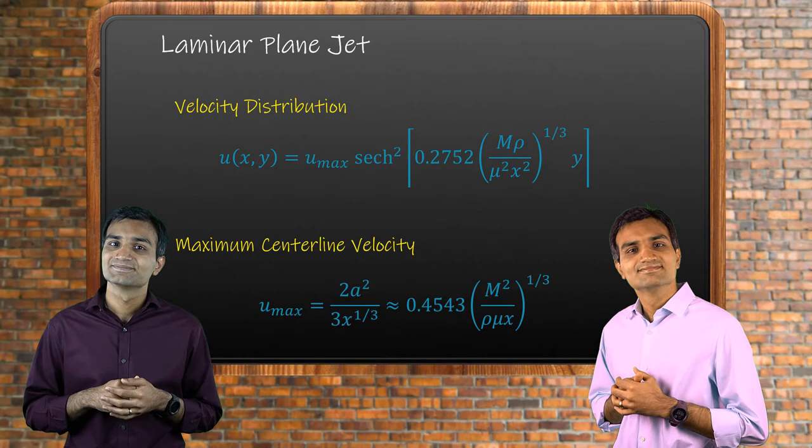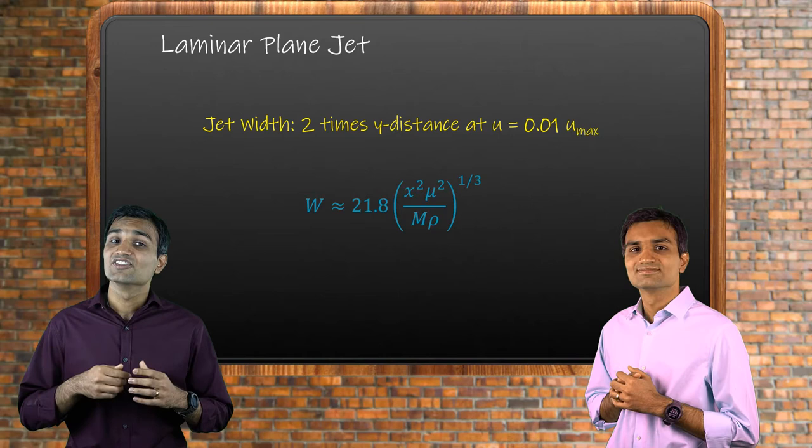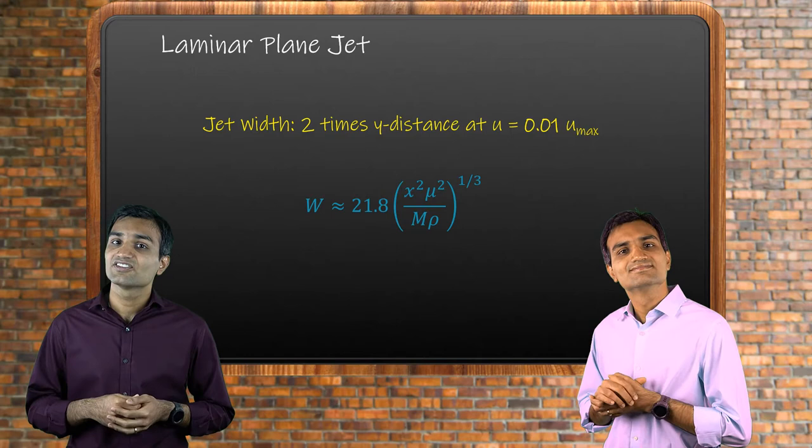The jet width is defined as twice the distance where the local jet velocity becomes 1% of its maximum velocity. The jet width increases at the rate of two-thirds power based on the location of the jet from its exit. A plane jet can quickly transition to turbulence at very small Reynolds number of 30.